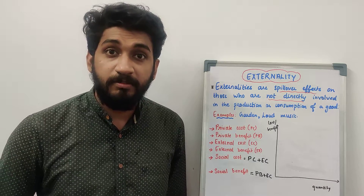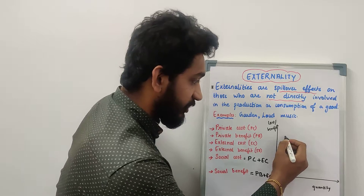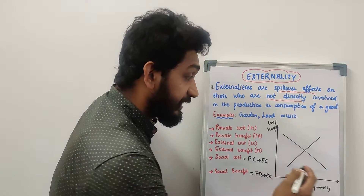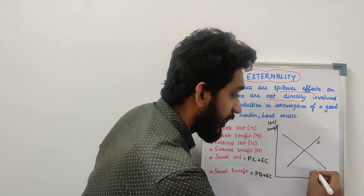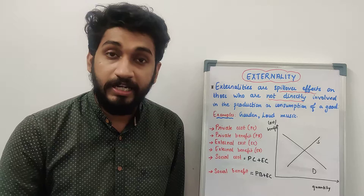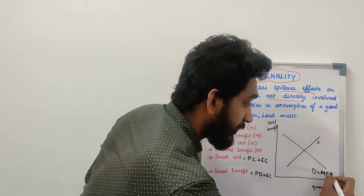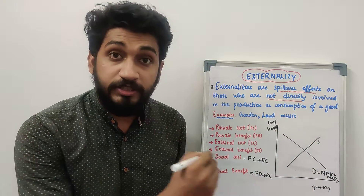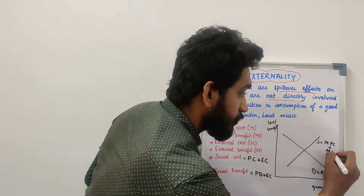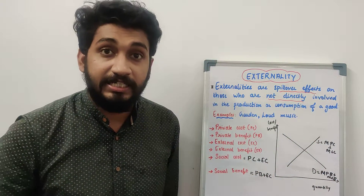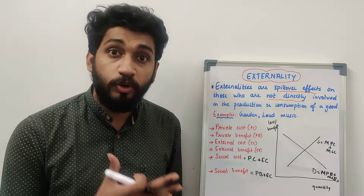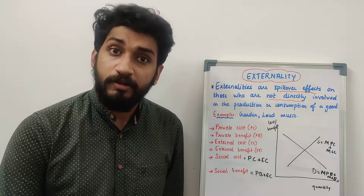In a free market, market equilibrium is where the demand and supply curves meet. On the x-axis is quantity; on the y-axis is cost or benefit. In the absence of externality, the demand curve — which deals with utility or benefit — represents both marginal private benefit and marginal social benefit. The supply curve — which talks about cost incurred — relates to marginal private cost and marginal social cost.